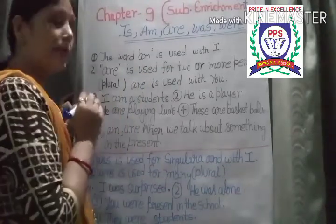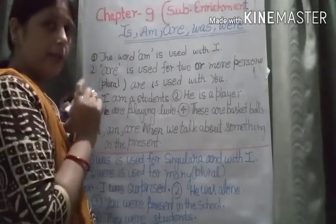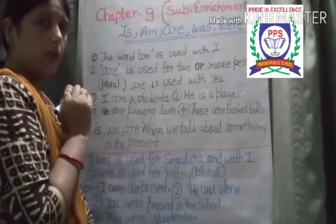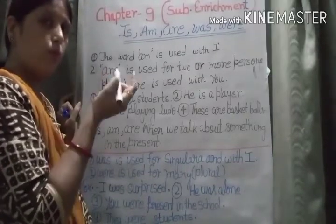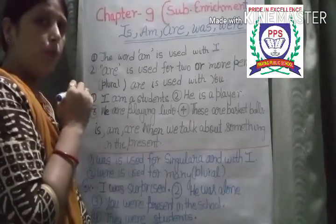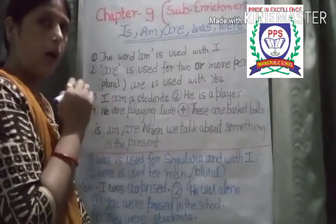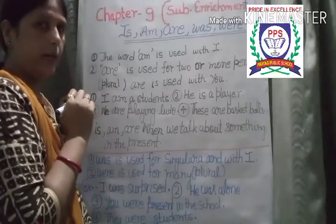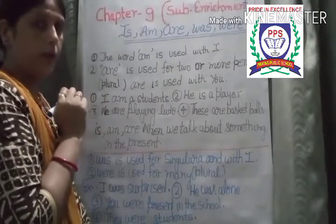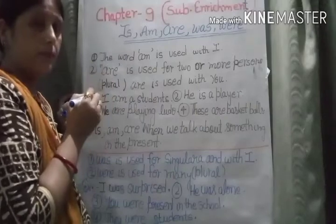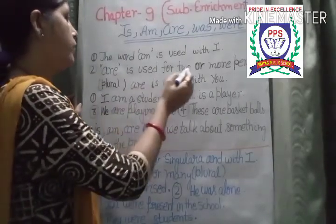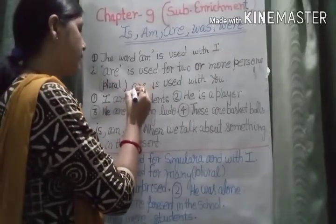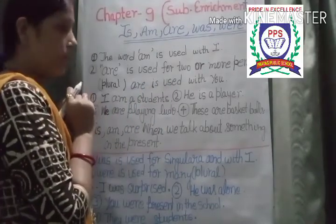Are is used for two or more persons. Aapne singular or plural padha hai na. 'Are' means 'hai'. Are is used with plural — ek se jyada ke sath. You ke sath bhi are ka use hota hai — you means 'tum'. You are a boy. They are players. So are is used for two or more persons, plural, and with 'you'.